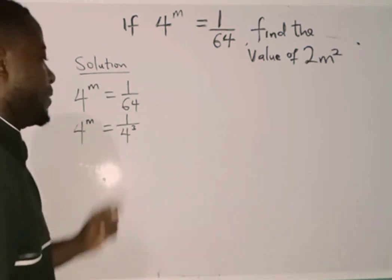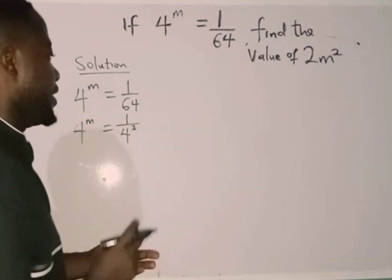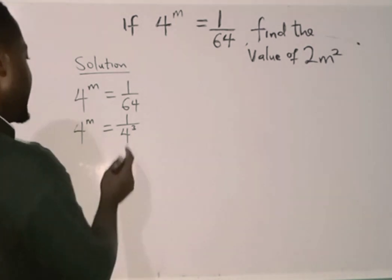64 can be changed to 4 raised to power 3. 4 times 4 is 16, 16 times 4 is 64. Then, the next thing.